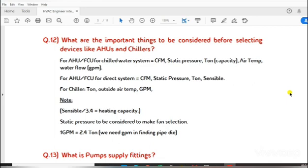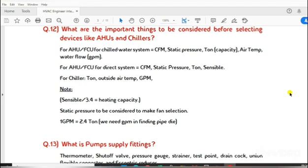For AHU/FCU for direct system: CFM, static pressure, ton sensible. For chiller: ton, outside air temperature, GPM. Note: sensible 3.4 equals heating capacity. Static pressure to be considered to make fan selection. 1 GPM equals 2.4 ton, we need GPM in finding pipe die.